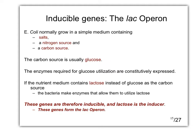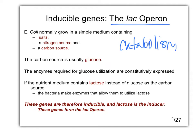The lac operon is a set of genes involved in metabolizing — specifically catabolizing — lactose. Catabolism means breaking something down, so to break down lactose we have to express certain enzyme-coding genes. E. coli, our model system, needs salt, nitrogen, and carbon. Generally, glucose is the carbon source, and it's the first energy source cells always use before any other. Glycolysis is the easiest way to use it, and bacteria work the same way.